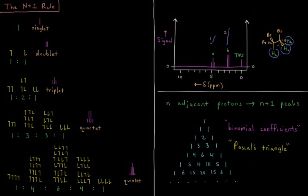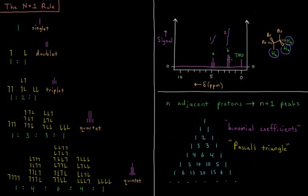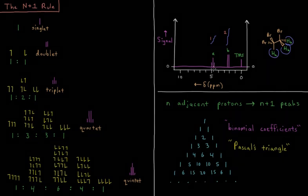So what we observe here is that these two protons form what is called a doublet, where we have two peaks of equal magnitude. And this proton here forms what is called a triplet, where we have these three peaks, with the peak in the middle being twice as big. So the question now is what causes this behavior, and what can we learn about it in general that we can apply to arbitrary molecules?